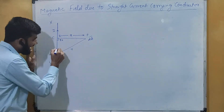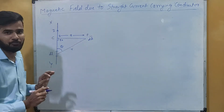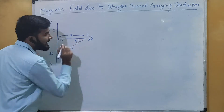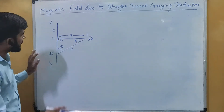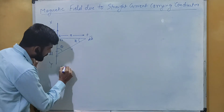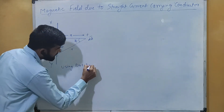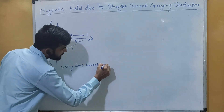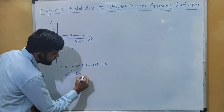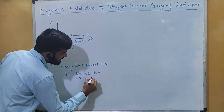The angle made between the current carrying element and the distance R is theta. We will consider this angle to be phi. Now first of all we will apply the Biot-Savart law. Using Biot-Savart law, dB is equal to μ₀/4π × I dL sin θ / r².